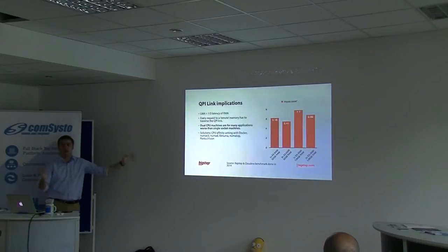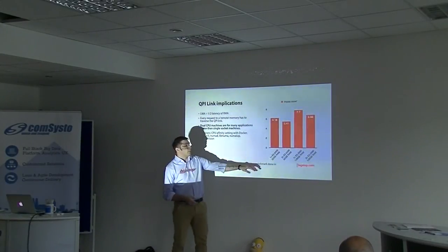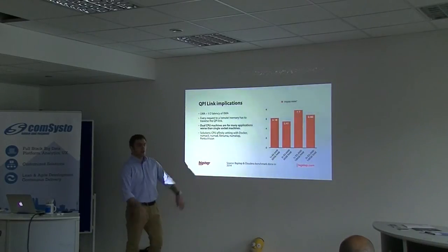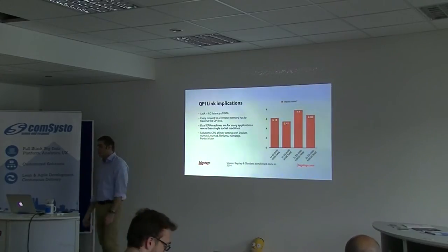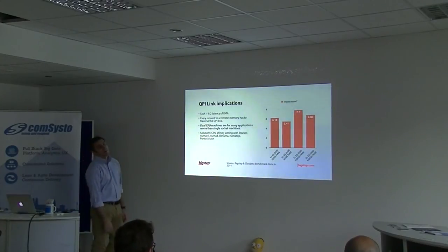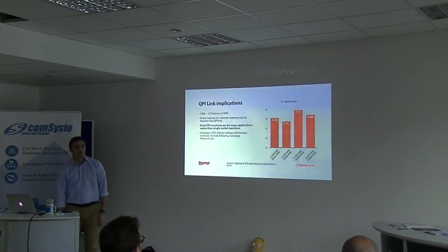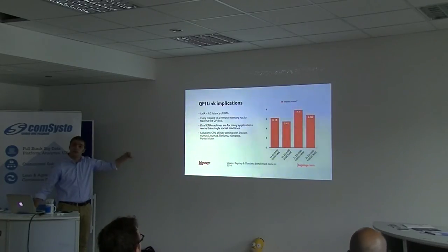We did a benchmark for Cloudera last year testing Impala's performance in various configurations. The study showed that a dual-socket configuration — a machine with two identical CPUs — actually has less performance than one with a single CPU. Whenever you think about spending money on additional CPUs, think about this. The problem is the QPI link: Impala processes have to talk to each other through it, which is not efficient. There are ways of controlling this with tools like NumaCTL, NumaD, and NumaTOP.